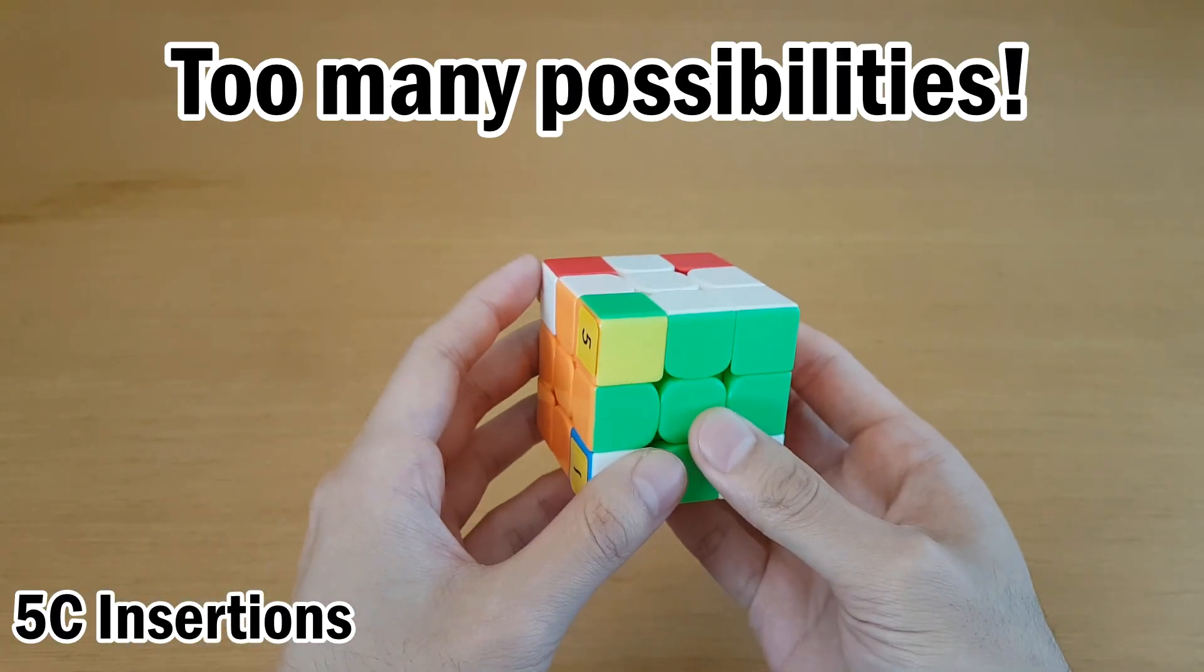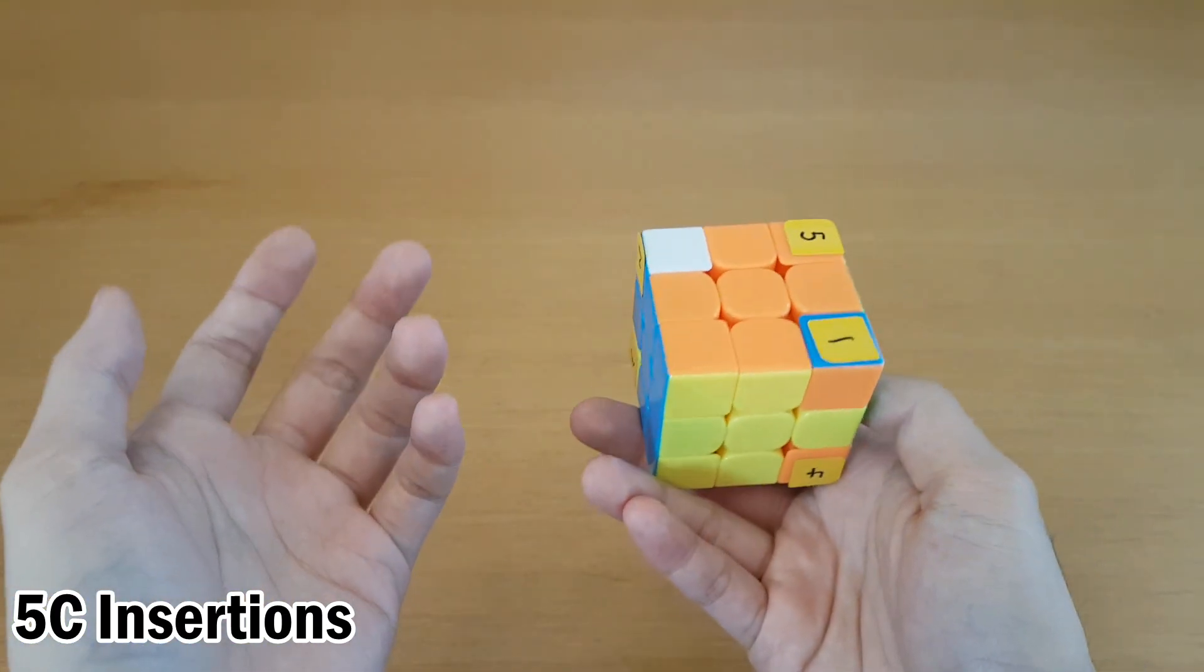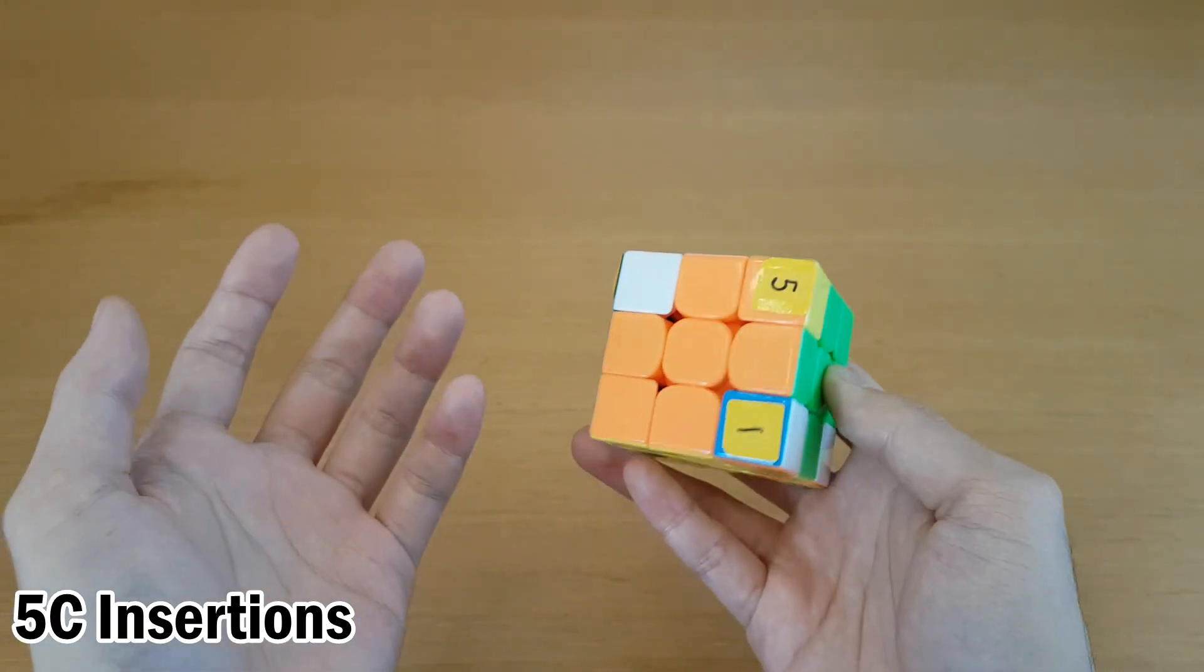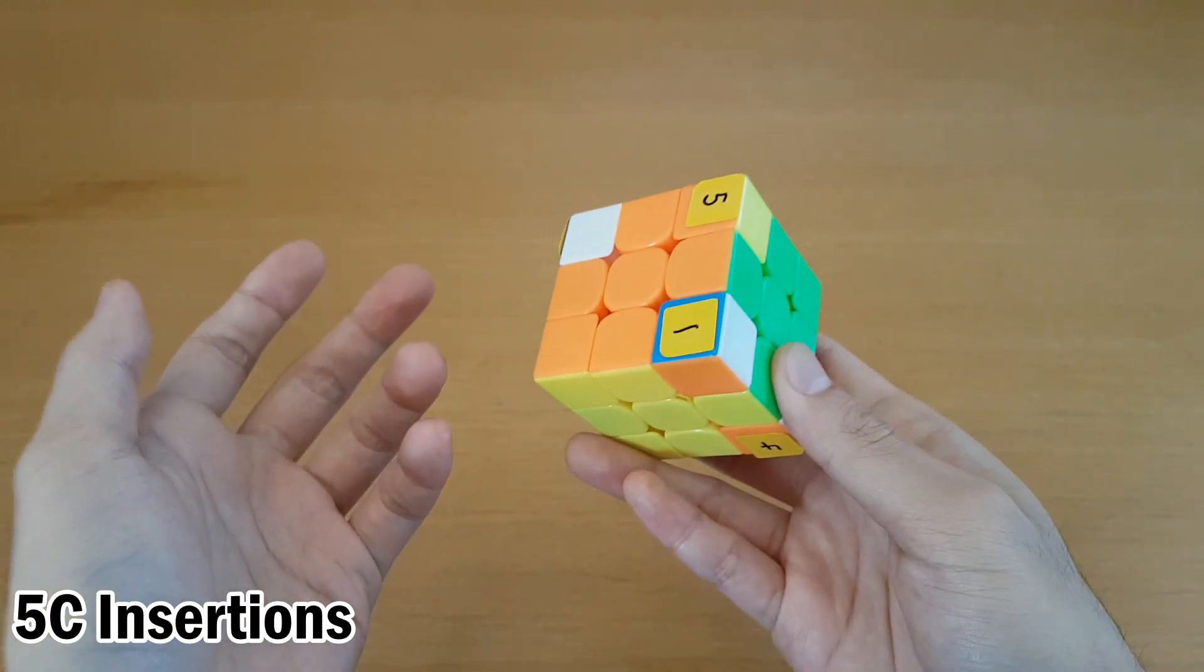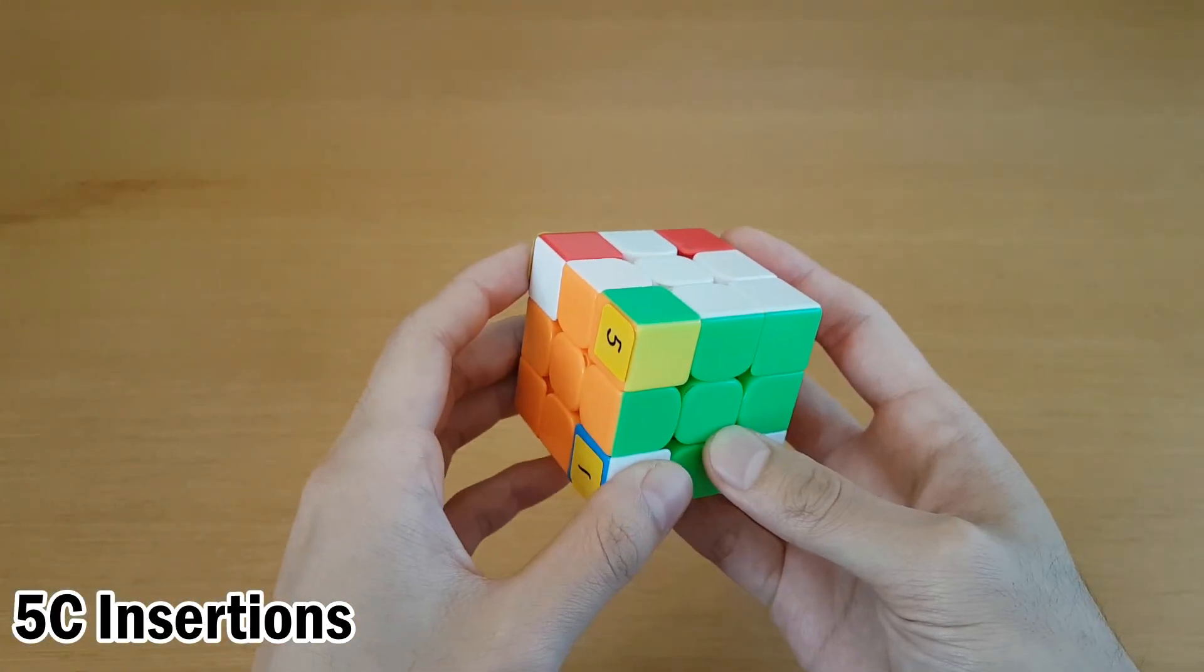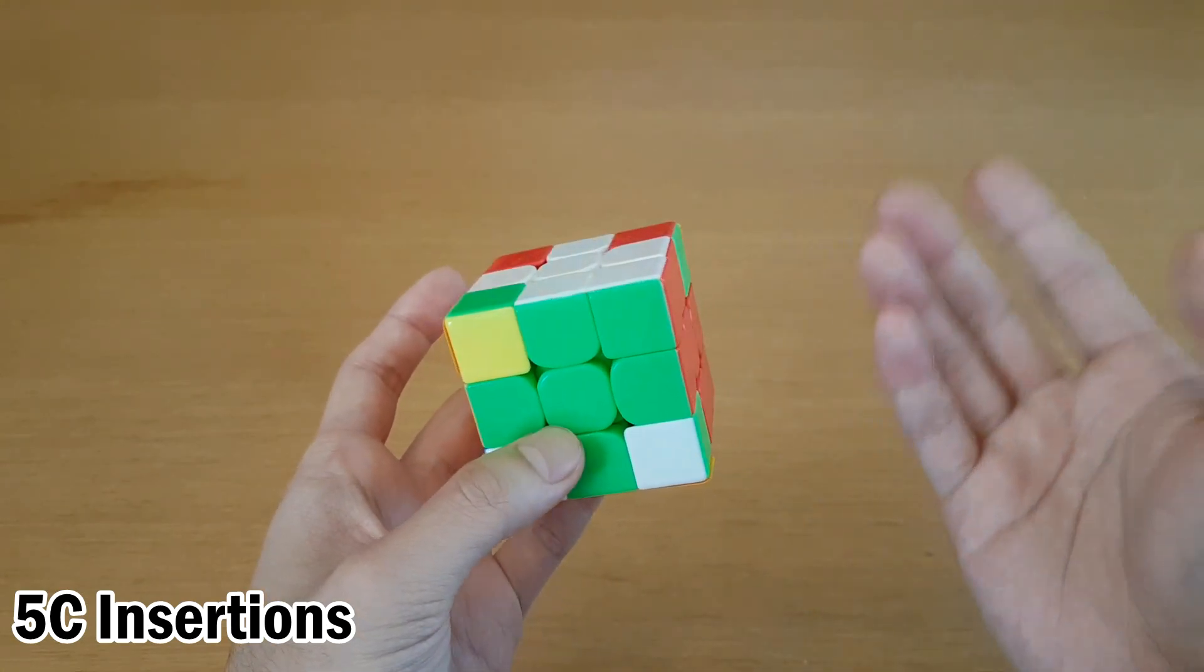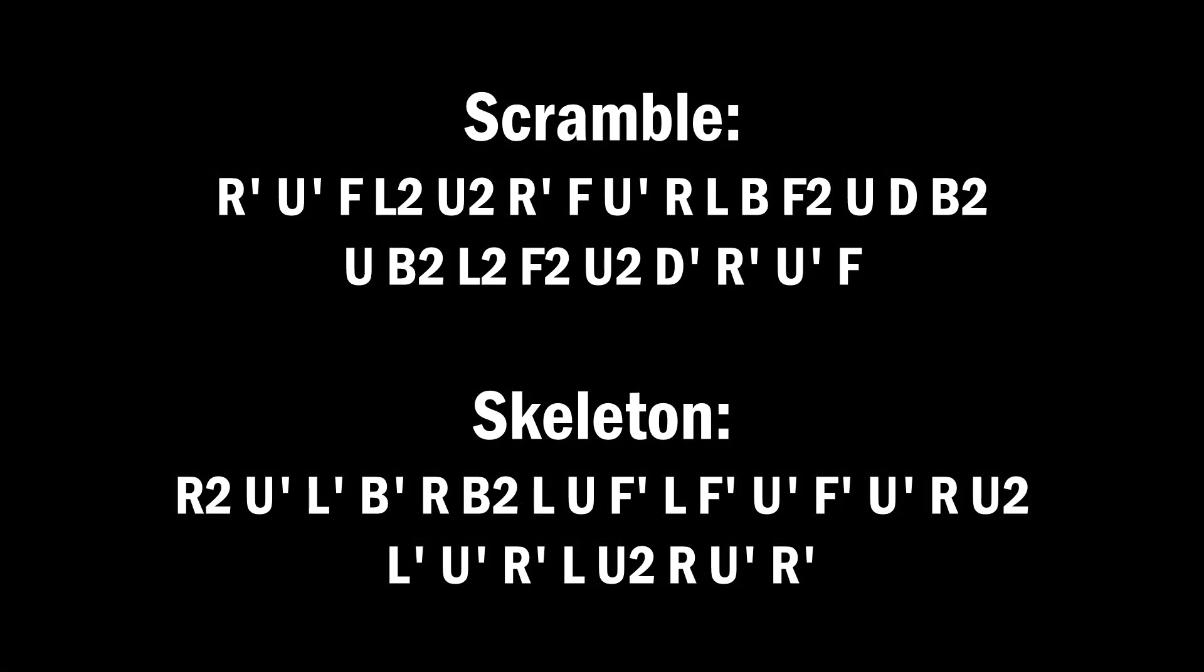That sounds rough, right? But we're not actually going to do that. Because there's so many options, we can assume a large number of moves will be cancelled. So with the assumption that you already know how to do insertions rather quickly, if you don't, maybe go through some practice three-corner skeletons in the description, I'm going to show you how I solve this five-corner skeleton rather quickly.